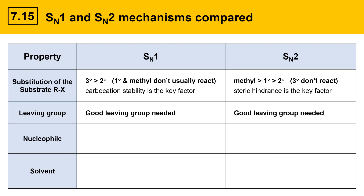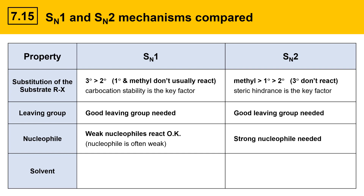Next we'll take a look at nucleophile. In the SN1 mechanism, weak nucleophiles react okay. In fact, in SN1 mechanisms, the nucleophile is often weak, and the reason for that is that conditions that support carbocations usually also require weak nucleophiles. For the SN2 reaction, the situation is different — a strong nucleophile is needed because it attacks in the rate determining step.